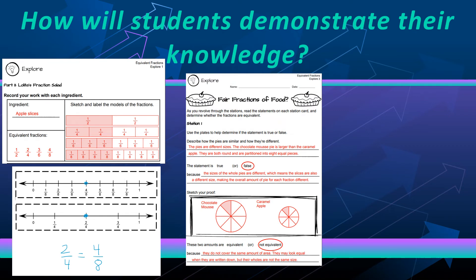Students might be creating models of cakes or pies in this case. This is an explore activity where students see that the chocolate mousse cake is larger than the caramel apple cake, so the one eighth of each slice would not be equal.